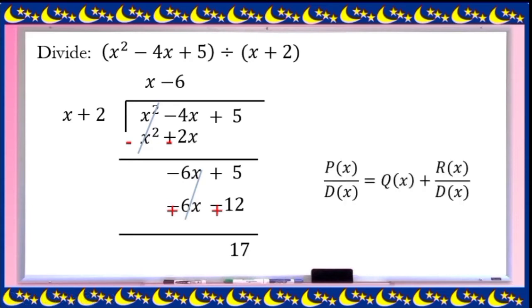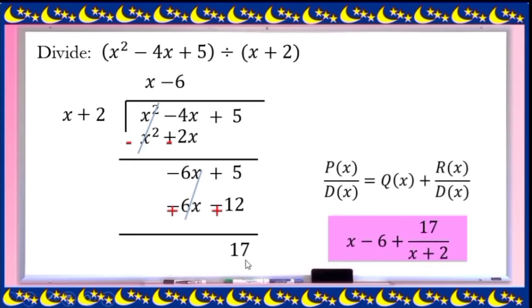Writing it in standard form, the final answer is: x minus 6, our quotient, plus 17 — our remainder — over our divisor x plus 2. So the final answer is x minus 6 plus 17 over (x plus 2).